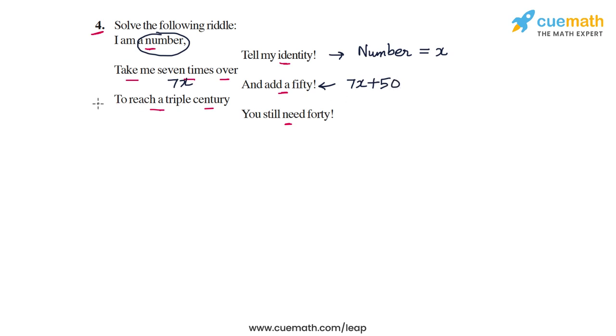But then it goes on to say to reach a triple century, you still need 40. This basically means that this number that you have is still 40 less than a triple century. Now, what is a triple century? A triple century is 300.